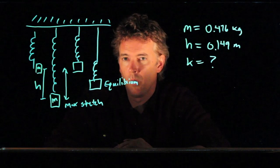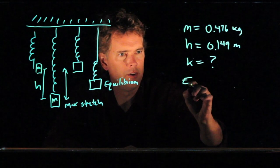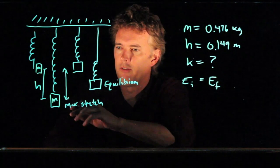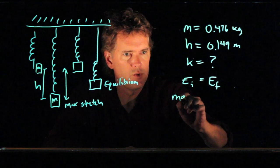One way that we can do it is simply conservation of energy. The energy initially has to be equal to the energy in the final picture. If this is the initial and that's the final, what do we have for initial? We have mgh.